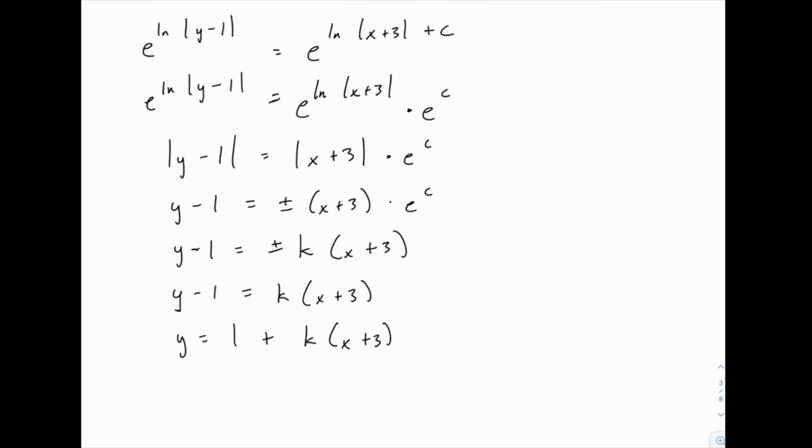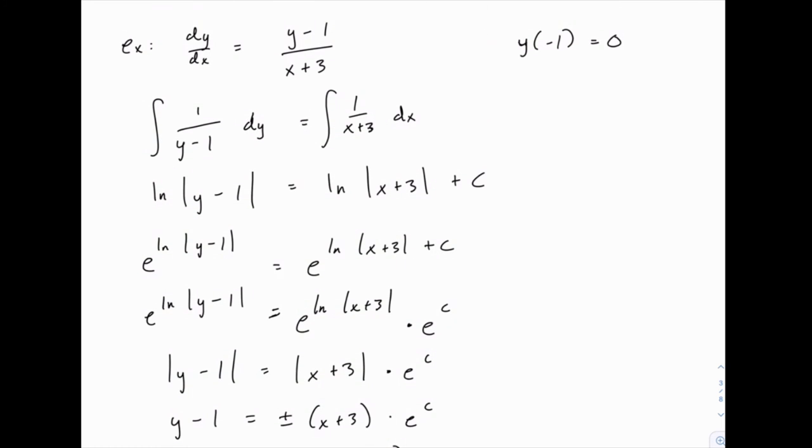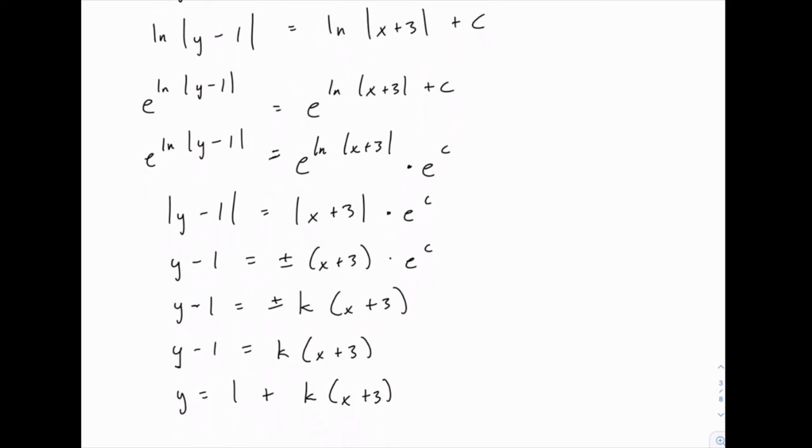And that's our general solution for y. To find a specific solution, we can use the initial condition, y of negative 1 equals 0. So we can plug in 0 for y and negative 1 for x. And go ahead and solve for k. So we have 0 equals 1 plus 2k. So k equals negative 1 half.